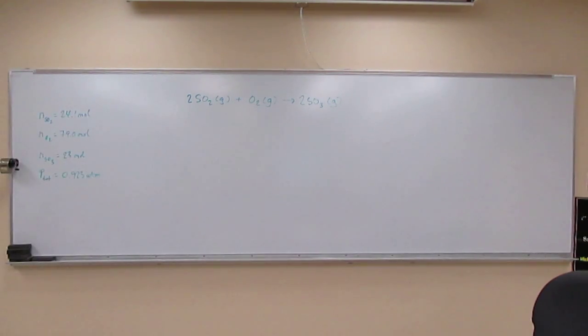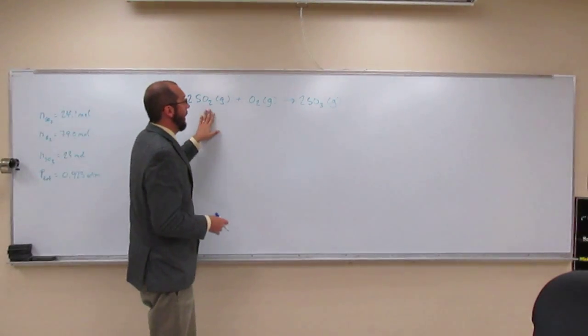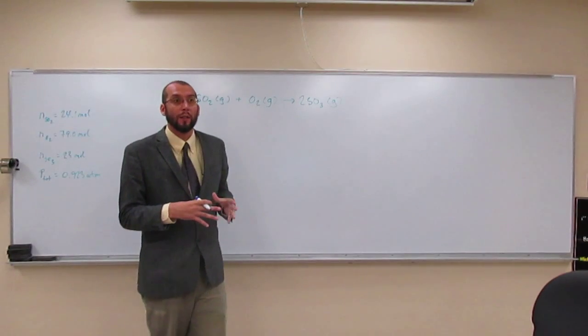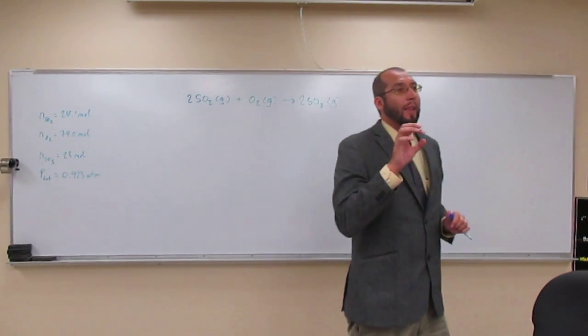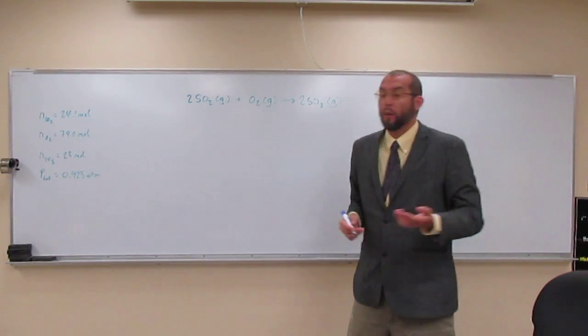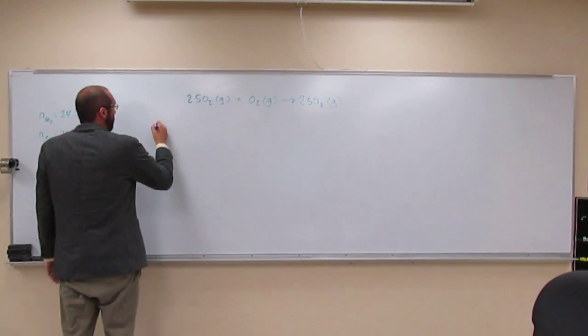The first thing you want to do is find the mole fraction. To do that, you need to know the total number of moles. To find the total number of moles, you add up all three of the moles present in the reaction. All three gases are present at a particular time, so what is the total number of moles? That's what we need to figure out first.